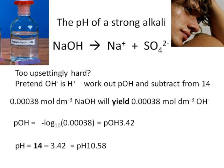Here's an example of how you would do that. Let's say there's 0.0038 moles per decimeter cubed of sodium hydroxide. That will give us 0.00038 moles per decimeter cubed of hydroxide ions. If we pretend that is hydrogen ions, we just make a calculation that the pOH would be minus log 10 of the concentration of alkali, and that gives us a pOH of 3.42.